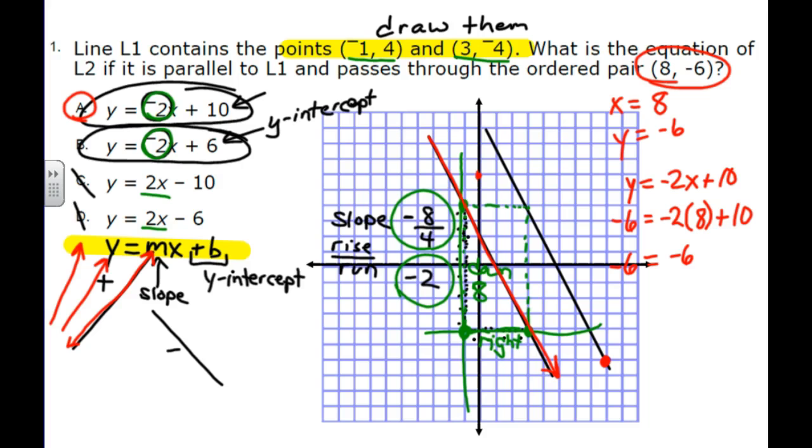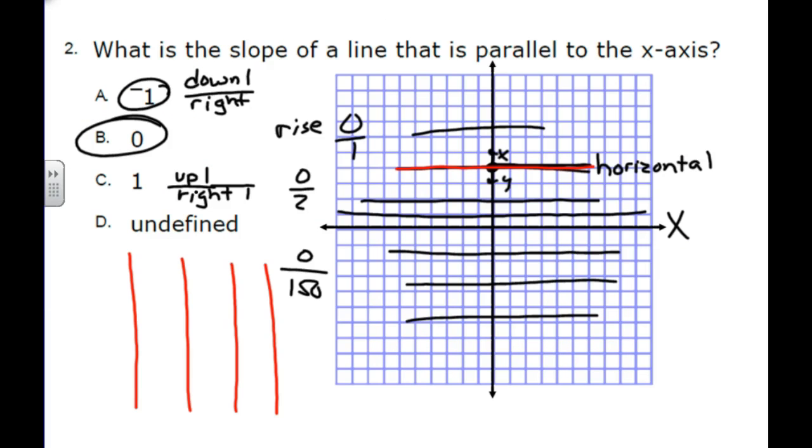That is getting higher and higher until finally you're up a wall, and it is almost impossible to climb that slope. And that's why we say vertical is undefined. Any vertical slope, any vertical line where you have x equals 7, or x equals 9, or x equals negative 1, all of those lines have an undefined slope because there is no y. You can't even put it in the form of the slope-intercept form of an equation.